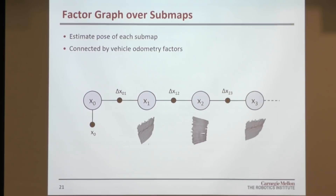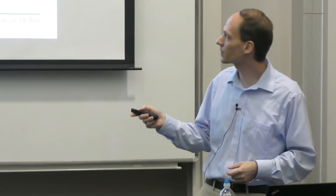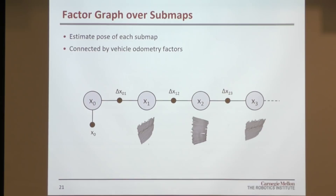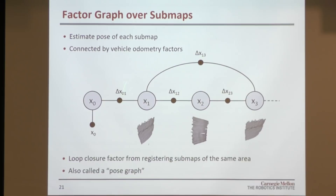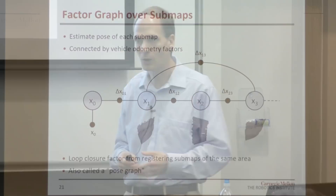To get loop closures without landmarks, we cross-register submaps. If the vehicle returns to an area it previously scanned and two submaps overlap, we register them together to find the offset between the two sonar poses — giving a loop-closing constraint that allows us to eliminate drift. This graph is also called a pose graph because it only involves poses and constraints between poses, with no explicit landmarks. Pose graphs are also frequently used outside of underwater robotics to reduce the complexity of optimization problems.